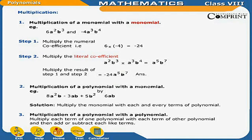Multiplication of a polynomial with a monomial. For example: (8a²b minus 3ab plus 5b²) multiplied by 6ab. Solution: Multiply the monomial with each and every term of the polynomial. Multiplication 3: Multiplication of a polynomial with a polynomial — multiply each term of one polynomial with each term of the other polynomial, then add or subtract like terms.